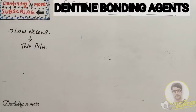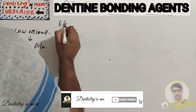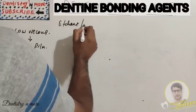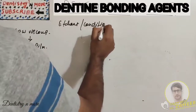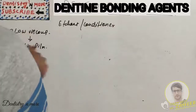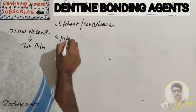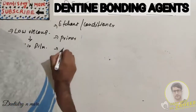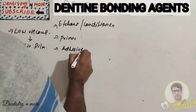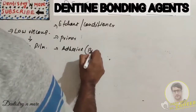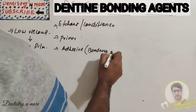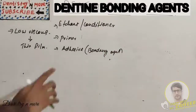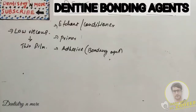Basically, we have three components in any bonding system. The first is the etchant or conditioner. The second is the primer. The third is the bonding agent or adhesive. The bonding agent has these three components - the etchant and primer are applied to achieve good bonding with the tooth structure.